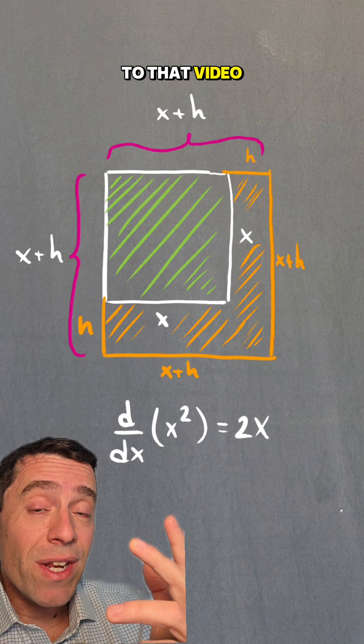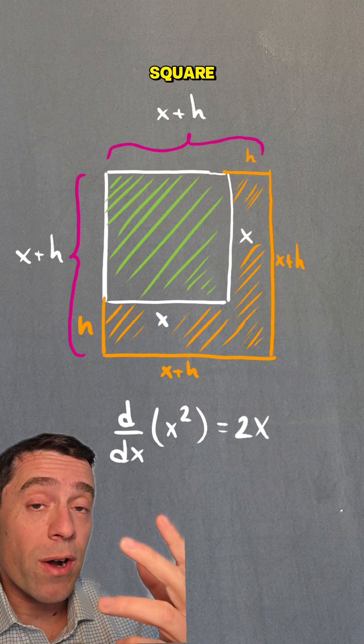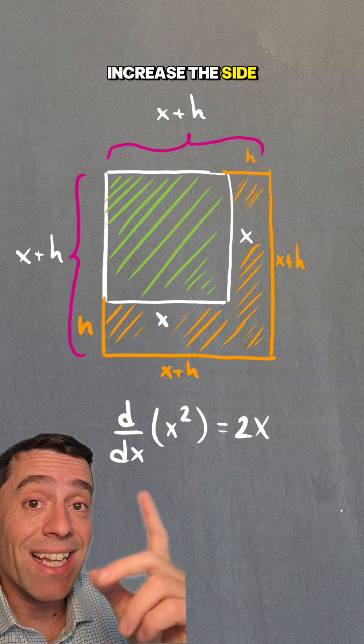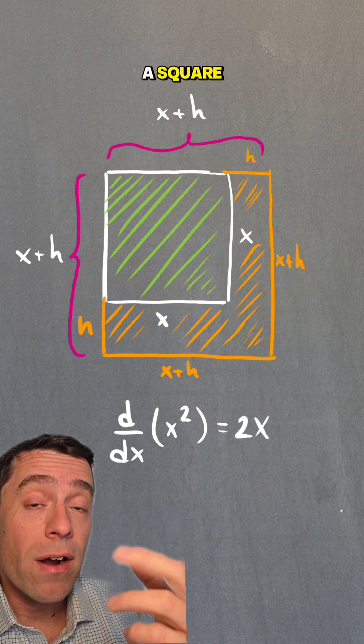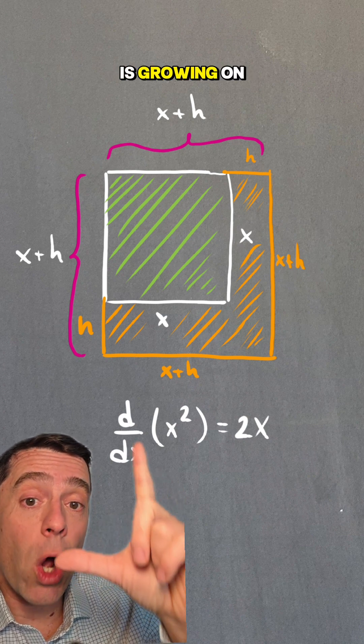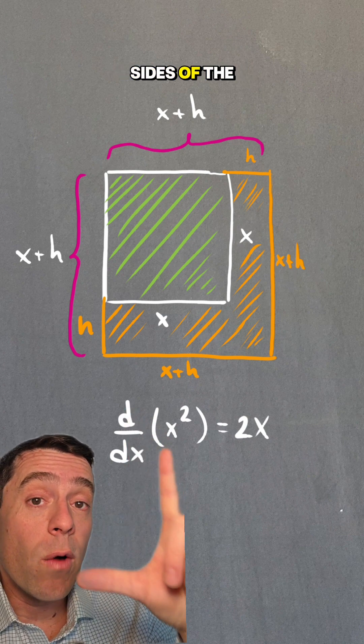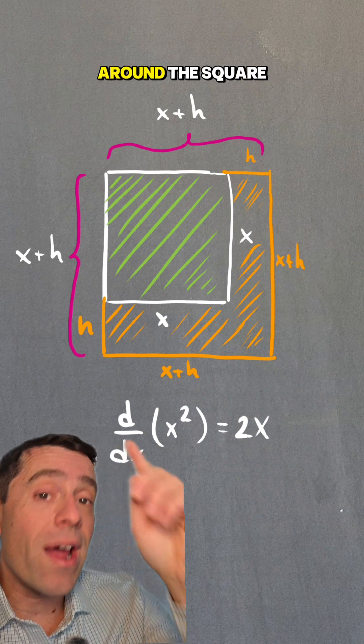Many people realized in the comments to that video that it doesn't work for a square because when you increase the side length x on a square, what happens is that the area is growing on two of the sides of the square and not all around the square.